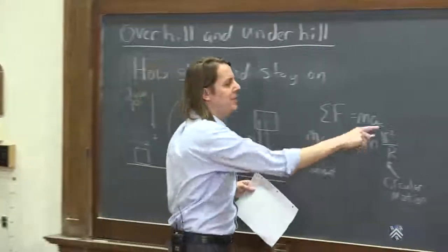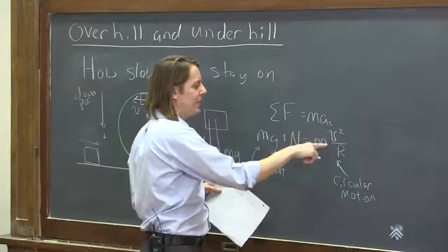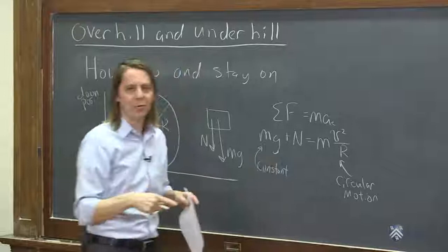This force doesn't change. So if we want to go at variable speeds and have different mv squared over r, difference in centripetal acceleration and time of the mass, we're going to have to have different forces. And mg can't change, so it must be that the normal force changes.